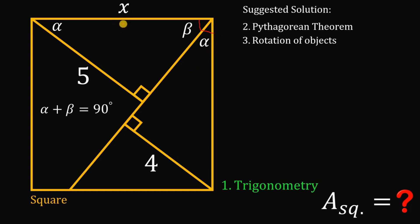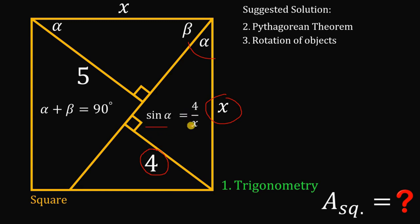Let x be the side length of the square. Since it is a square, all of its sides must be equal to x. Using this right triangle, we have alpha, x, and 4. We can relate these using the sine function: the sine of alpha equals 4 over x, which is the opposite side over the hypotenuse. On this other right triangle, we can get the cosine of alpha using x and 5: cosine of alpha equals its adjacent side, which is 5, over its hypotenuse x.